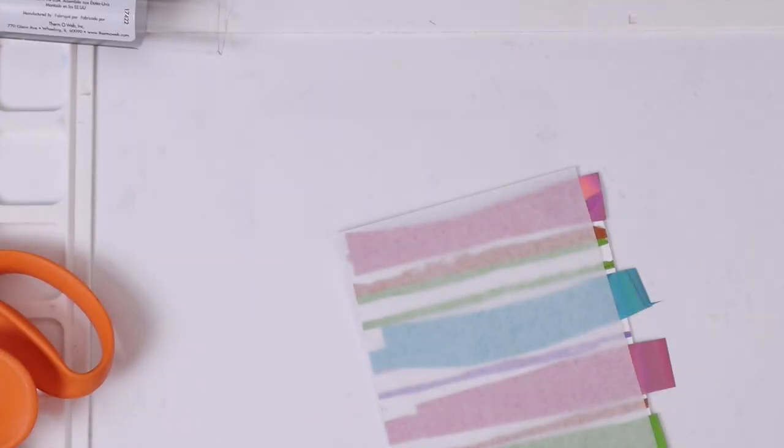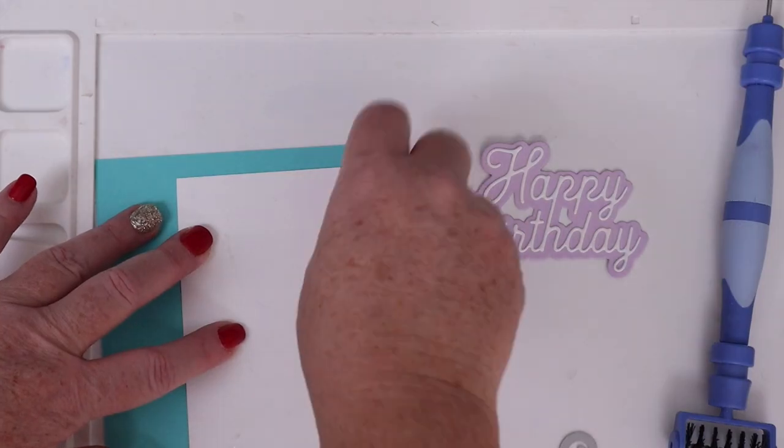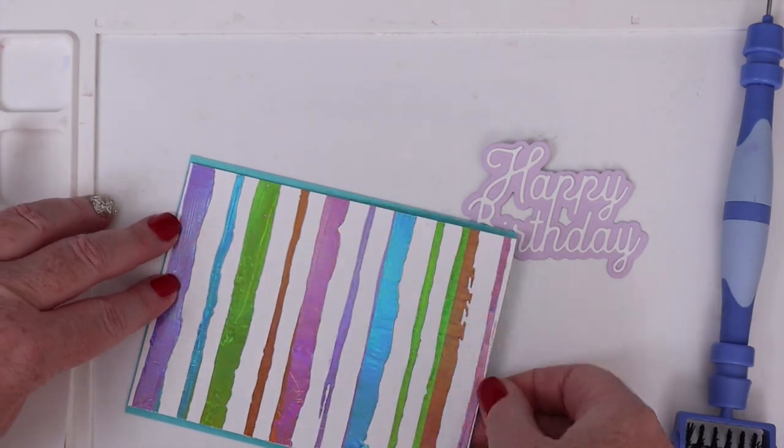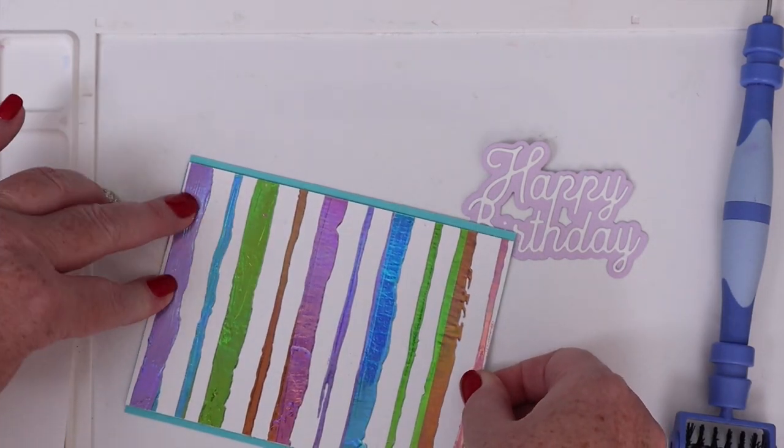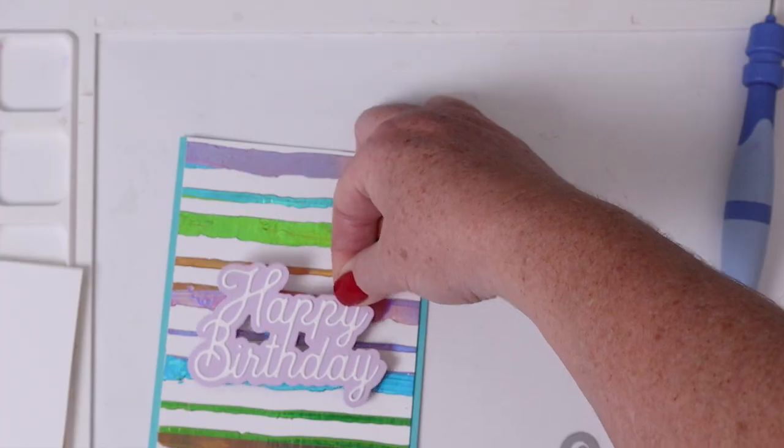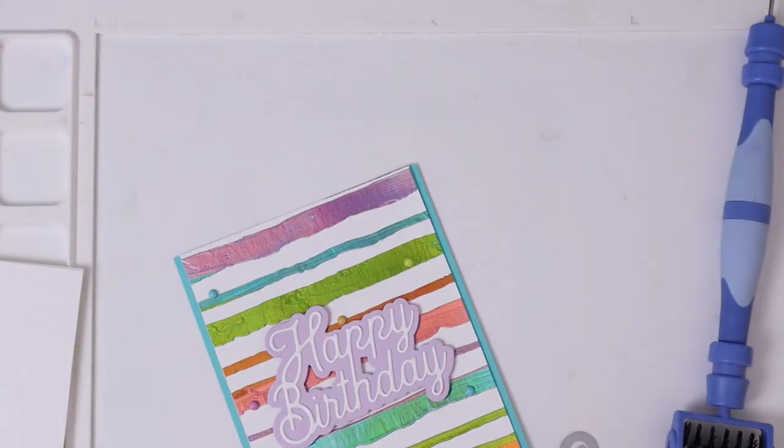I cut the foiled background down to four by five and a half and adhered it to an A2 cardstock panel, popped up the Happy Birthday sentiment, and added a few colorful enamel dots for extra embellishment.